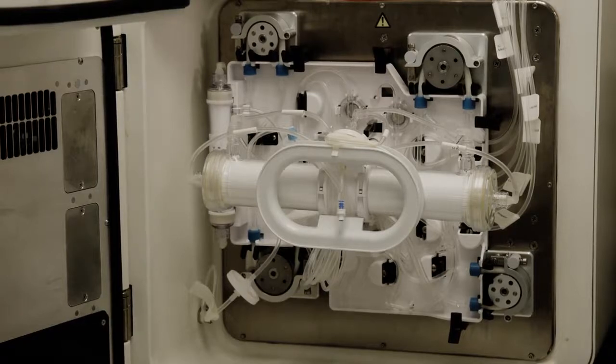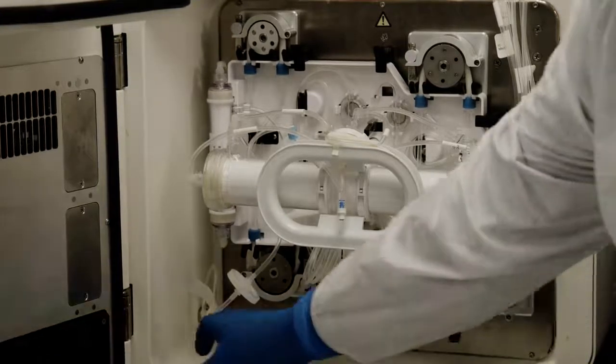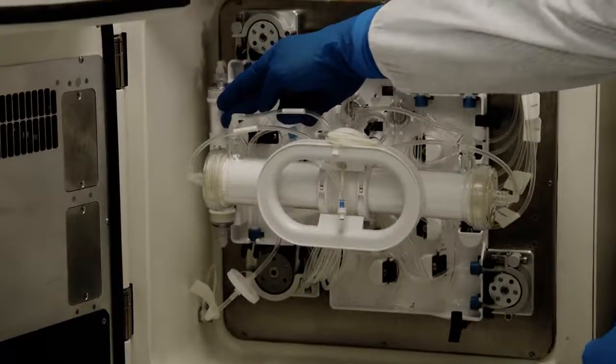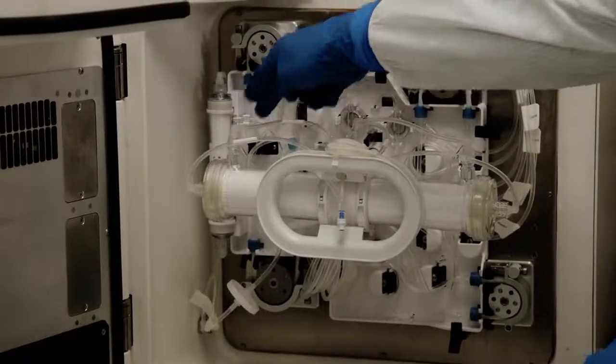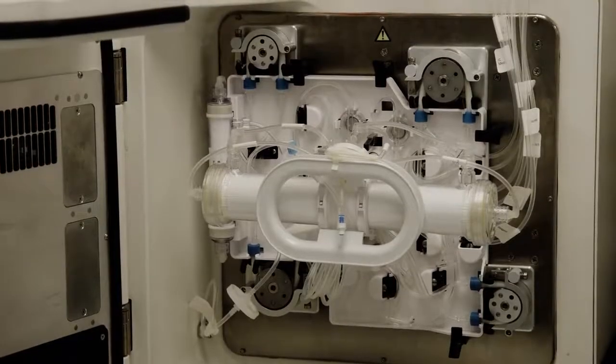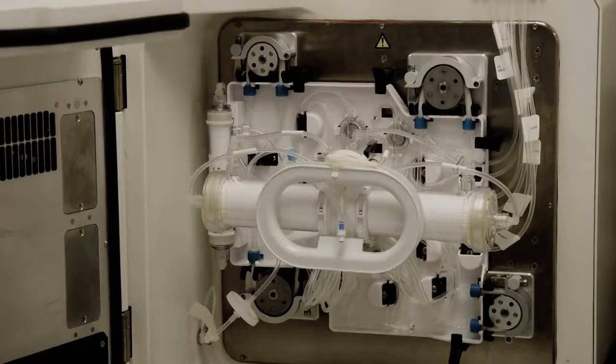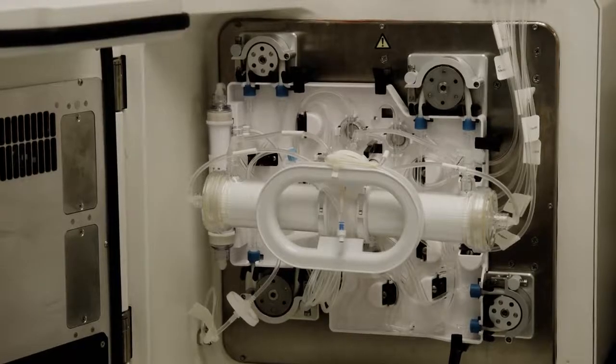Gas is fed from the gas tank into the disposable via the gas inlet line and into the gas transfer module of the GTM. Just like the bioreactor, the GTM here has hollow fibers that allow for maximum surface area for gas exchange into and out of the culture medium.